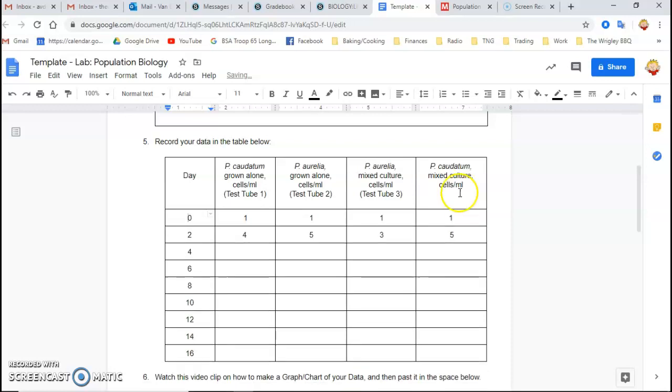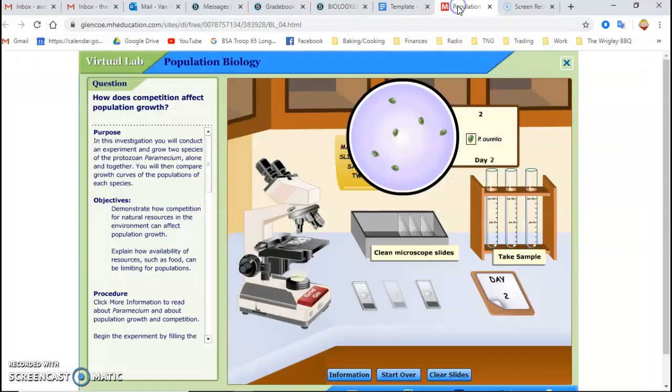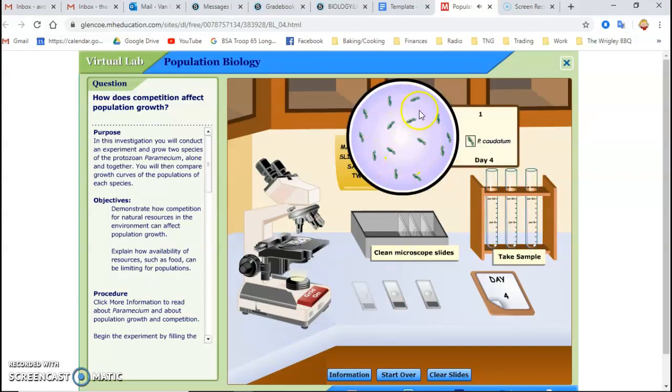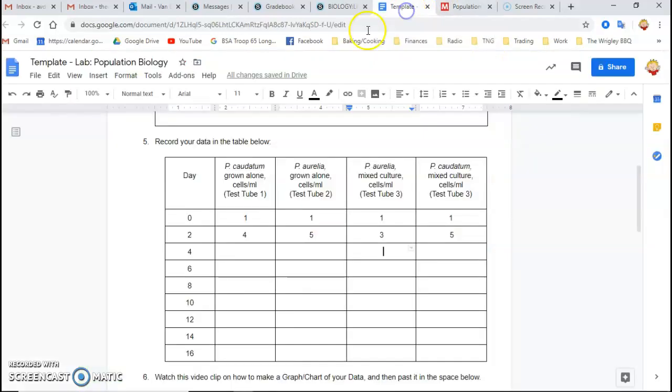But like I said, by the time you guys are doing this, the template will have been changed. So there we go. And so then you go back. Clear the slides. Day four. And then same thing. Clean microscope slides. Take samples. Go under the microscope and count how many of each. And then record it here.